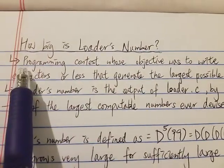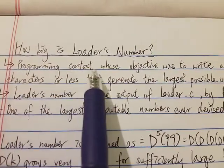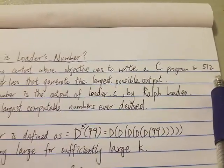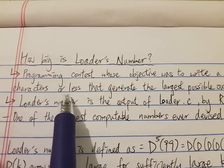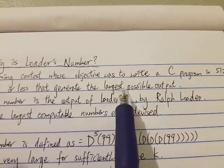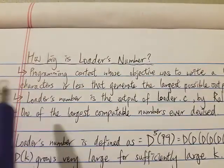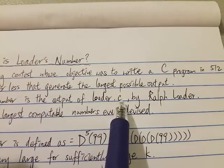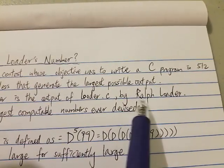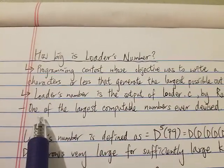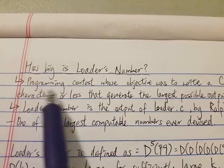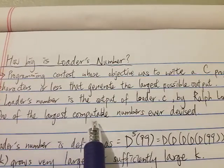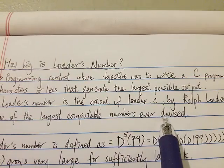Loader's number came from a programming contest whose objective was to write a C program in 512 characters or less that generates the largest possible output. Loader's number is the output of the program loader.c by Ralph Loader. It's the winning number in this contest and is one of the largest computable numbers ever devised.